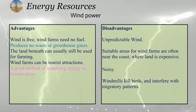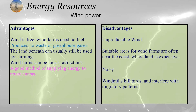The advantages of wind power: wind is a free form of energy. Wind farms do not need any kind of fuel and produce no waste or greenhouse gases. The land beneath the windmill can be used for farming or other things — unlike solar energy where you cannot use the land. Wind farms can also be a tourist attraction and are a good method of supplying energy to remote areas.